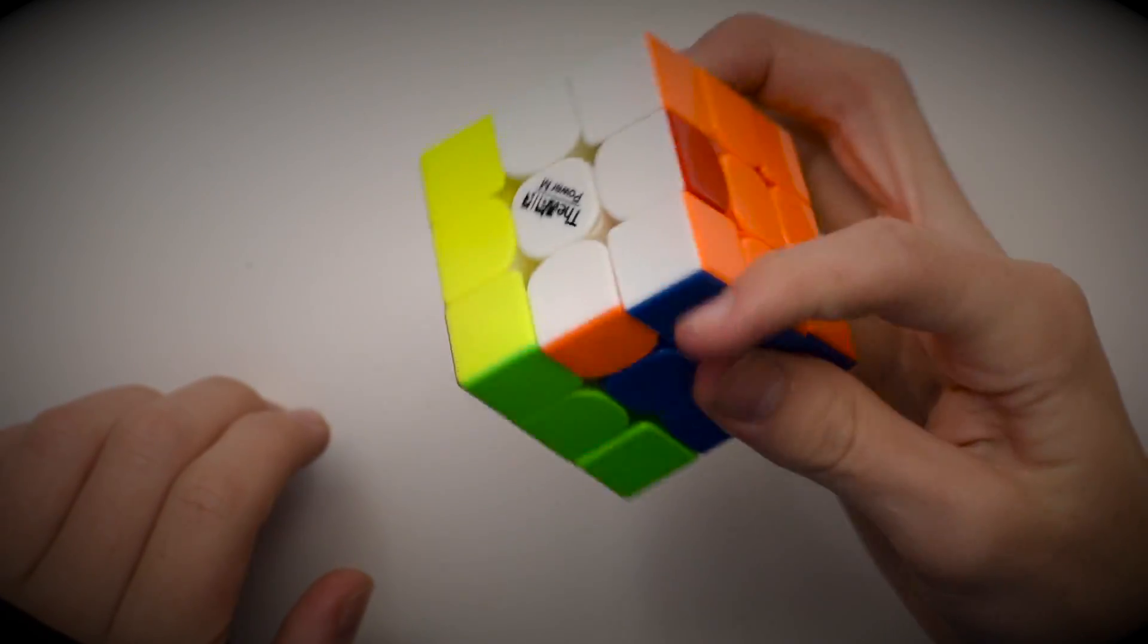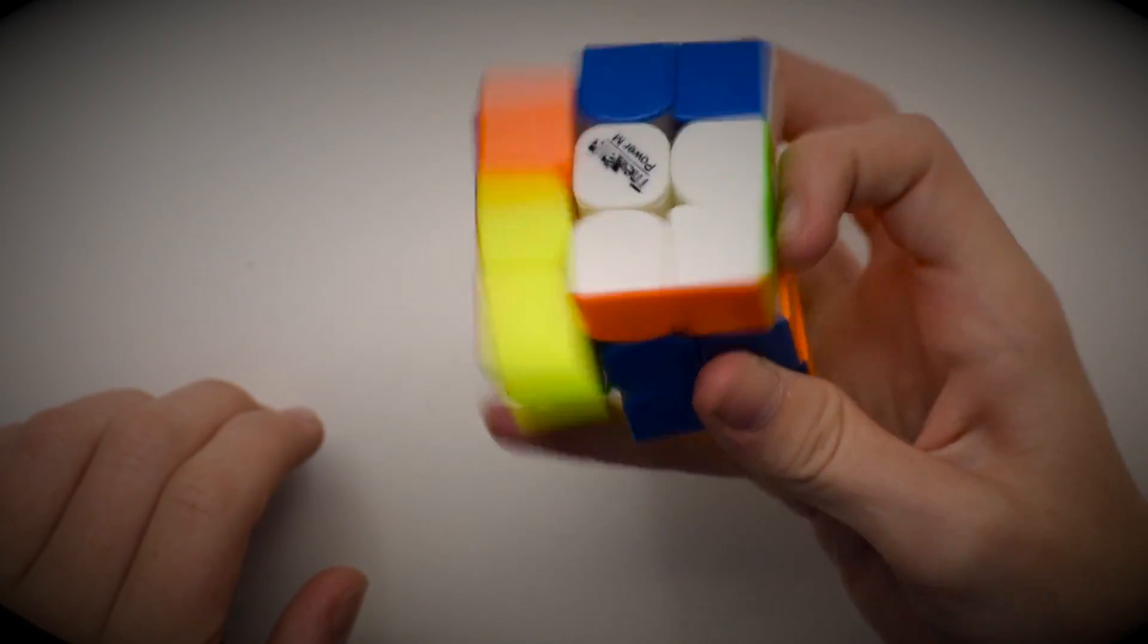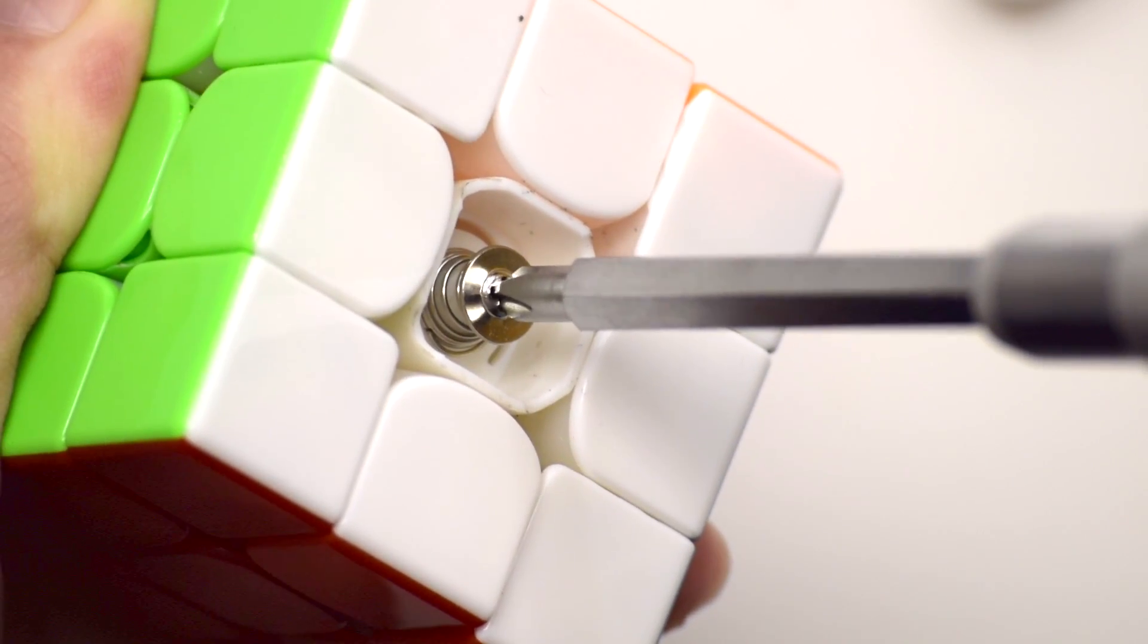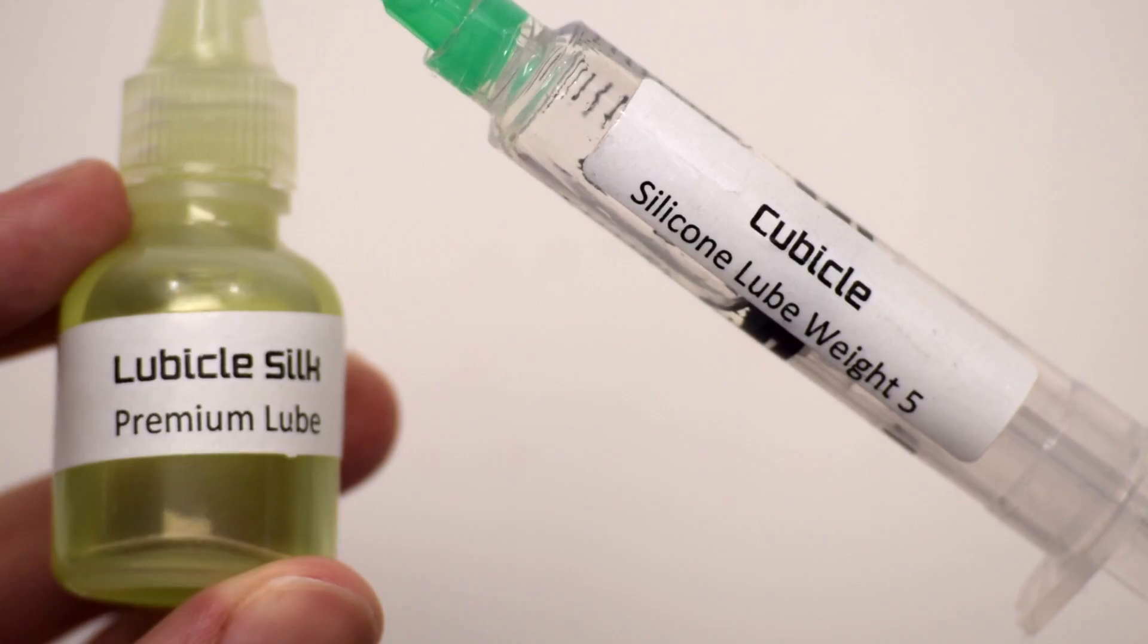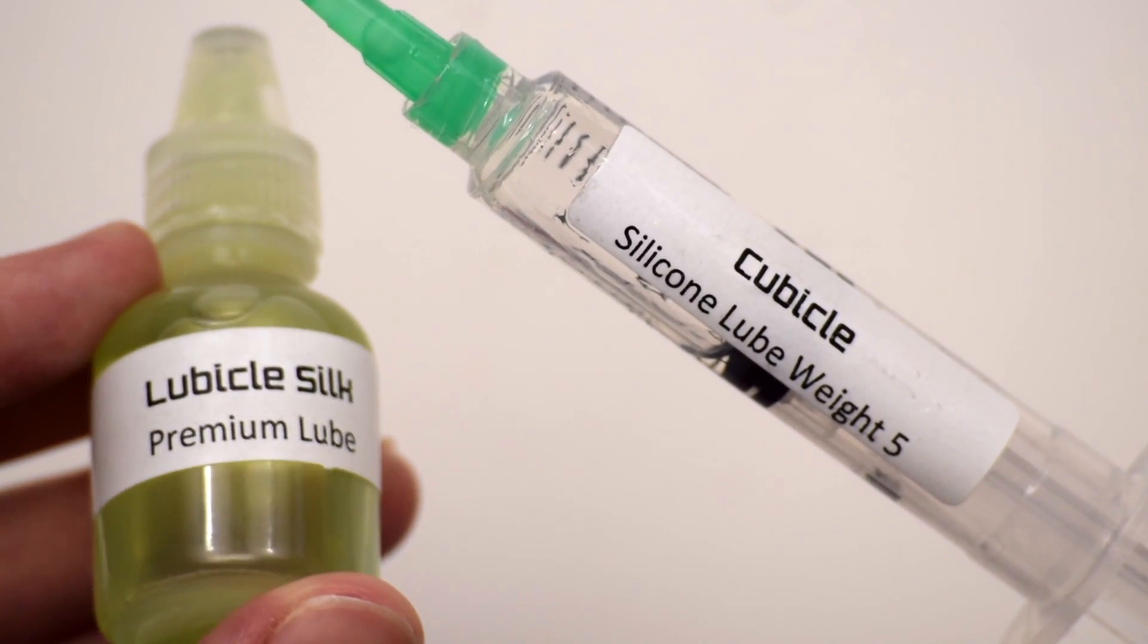Out of the box, the puzzle was smooth and promising, but nowhere near what I wanted. I like slightly slower, controllable cubes, so I ended up tightening the puzzle a fair amount and using a combination of weight 5 and Lubicle's silk on the pieces.